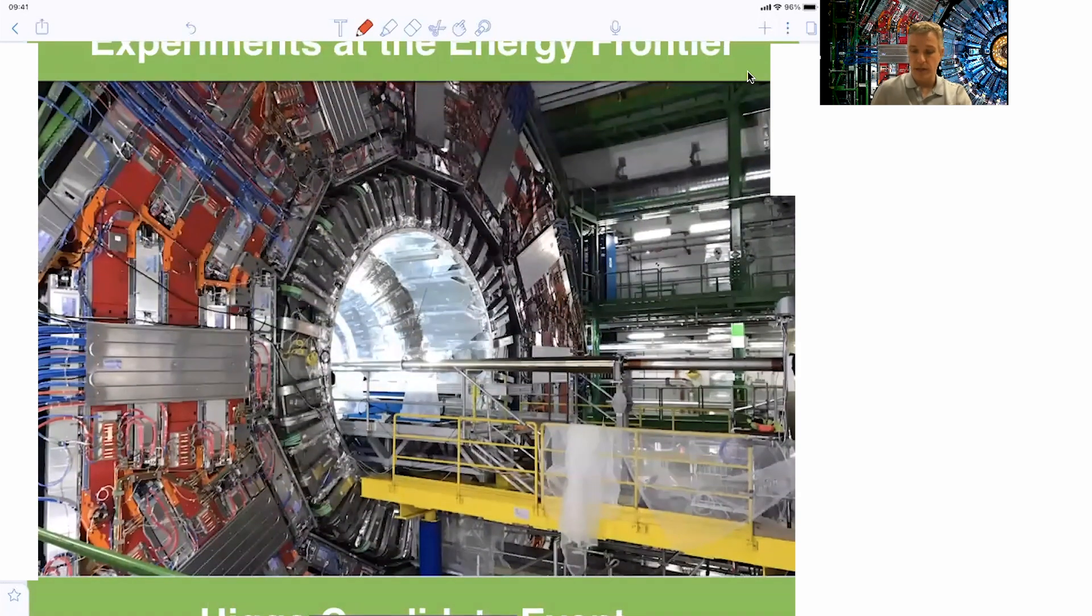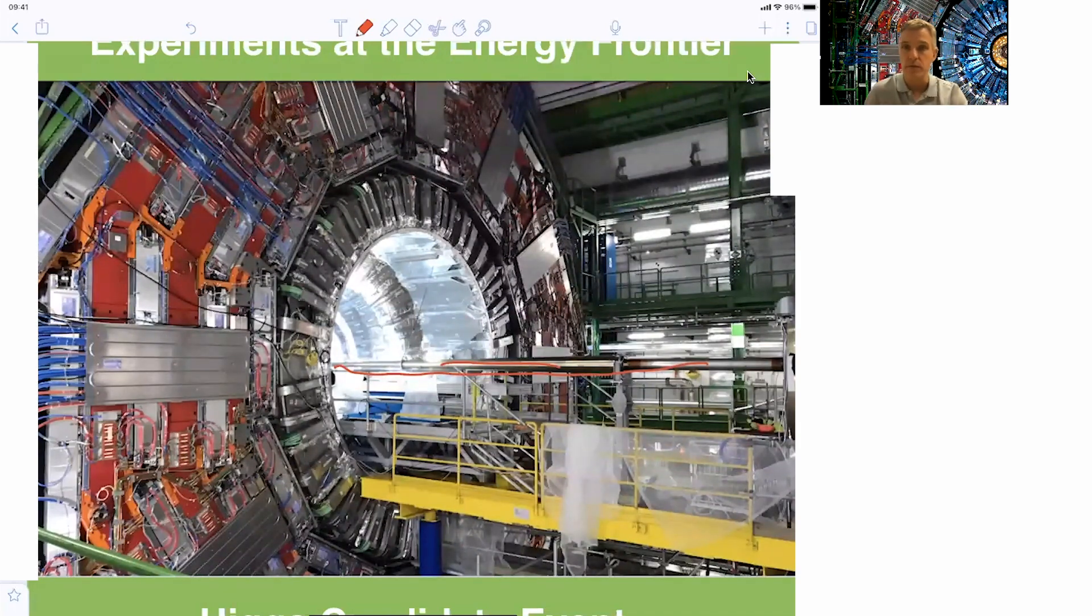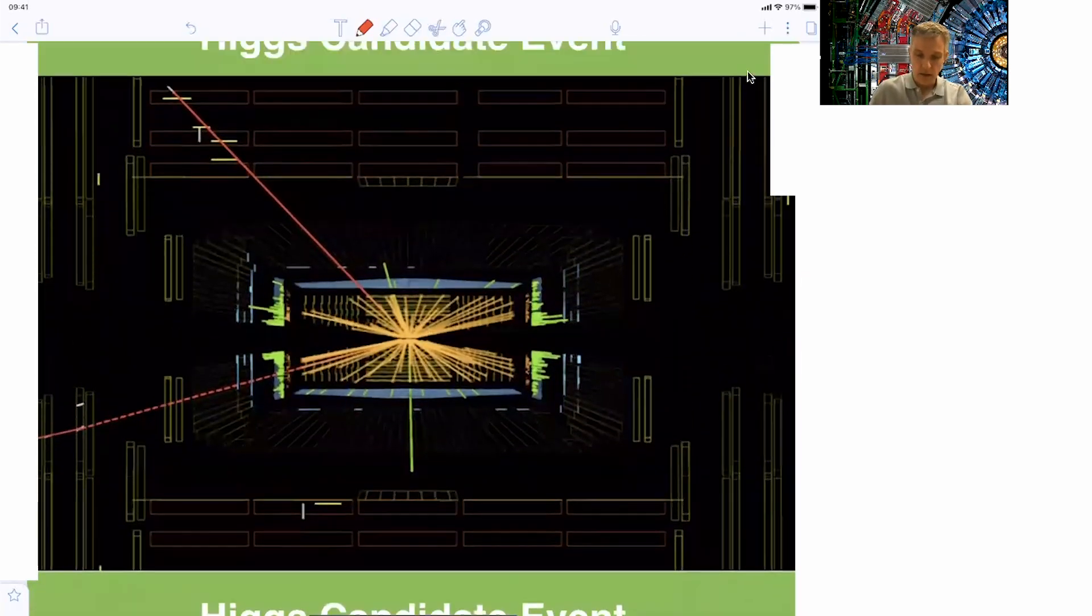The silver part in the middle gives the CMS detector its name. It's the solenoid, a 3.8 Tesla superconducting magnet. Then we have more detectors out there to see whether some particles might escape and we try to measure those as well. There's another very nice picture. After opening the detector, you see this silver thing in the middle is the pipe in which the protons zoom through the detector and are brought into collision in the very center part of it.